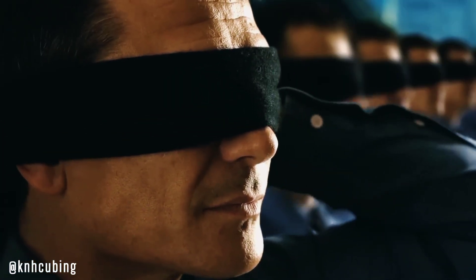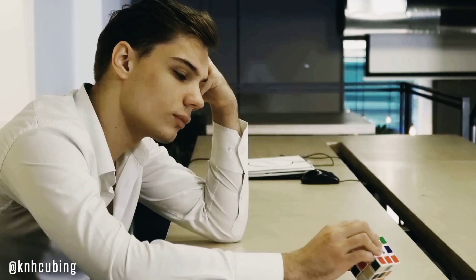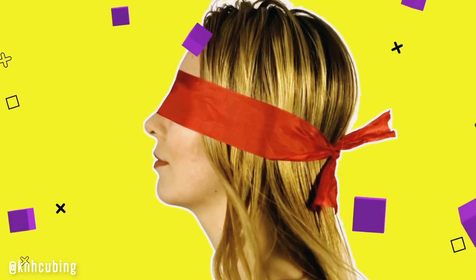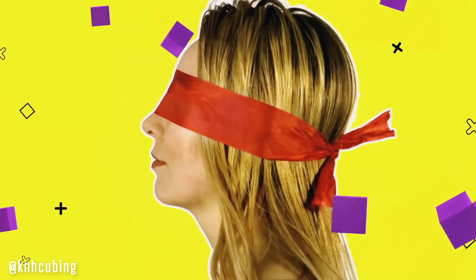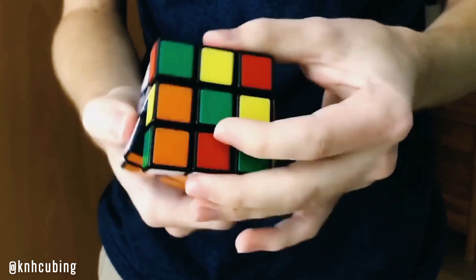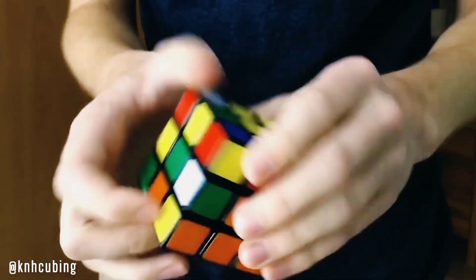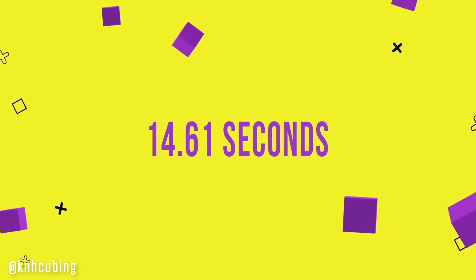I bet you didn't know that there's also other variations of solving events. One of them is blindfolded solving. The contestant first looks at the cube to determine the state of the cube and think of the strategy. Then, they get blindfolded and solve it. The time runs all the time, examining the cube before getting blindfolded and after it until the person solves the cube. The record is 14.61 seconds.